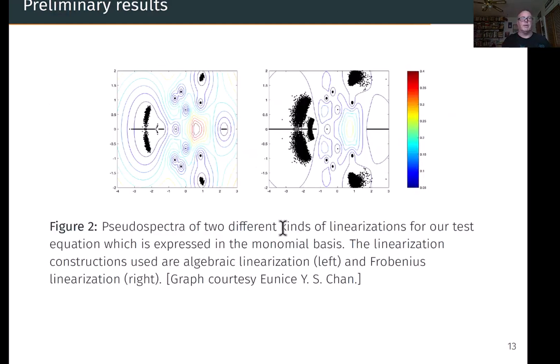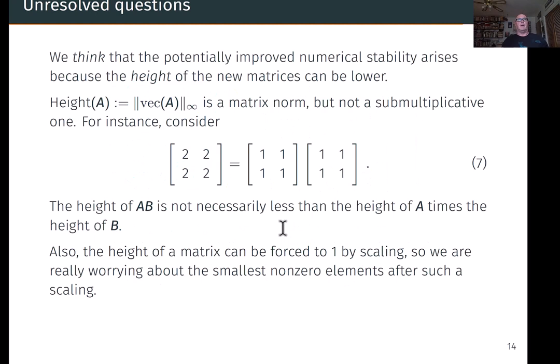It's essentially a random example. Here we see the pseudo-spectra of the two different kinds of linearizations. The one on the left is the algebraic linearization, and you see that there are tighter curves. So that means you kick the polynomial, or kick the matrix polynomial's coefficients, the eigenvalues don't change very much. Whereas on the Frobenius one, you kick it and they change more significantly. Again, this is a random example which says that sometimes things can be better with algebraic linearizations. So there's things to explore here.